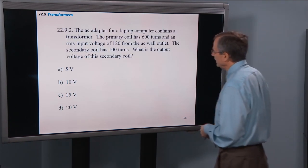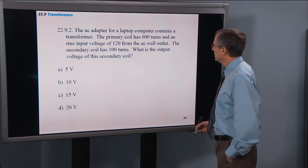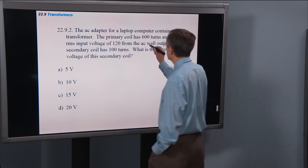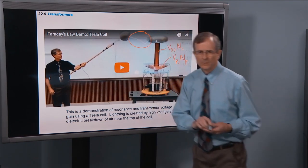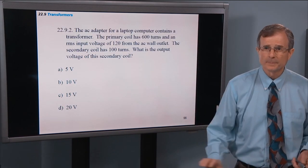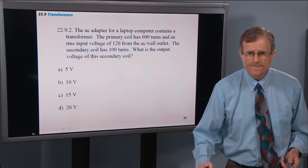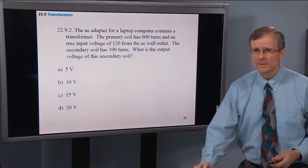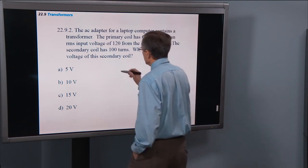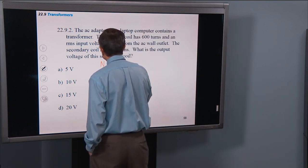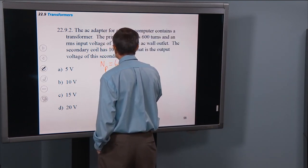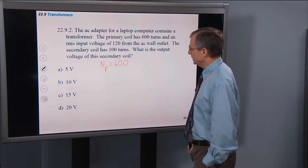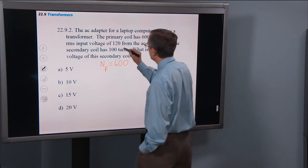All right, the AC adapter for a laptop computer contains a transformer. The primary coil has 600 turns. So the number of turns in the primary is 600, and an RMS input voltage of 120 volts.